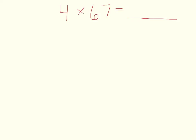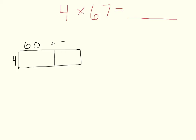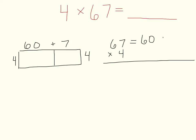So here we have 4 groups of 67, and we can represent that in an area model pretty quickly. We have 4 groups of 67, so that's 60 plus 7. We'll put a 4 over here too, so we can kind of see that whole thing going on. And we can set up some expanded notation to the right — we take that 67 and break it apart into its place value components: 60 plus 7, and of course the 4 remains just a 4.